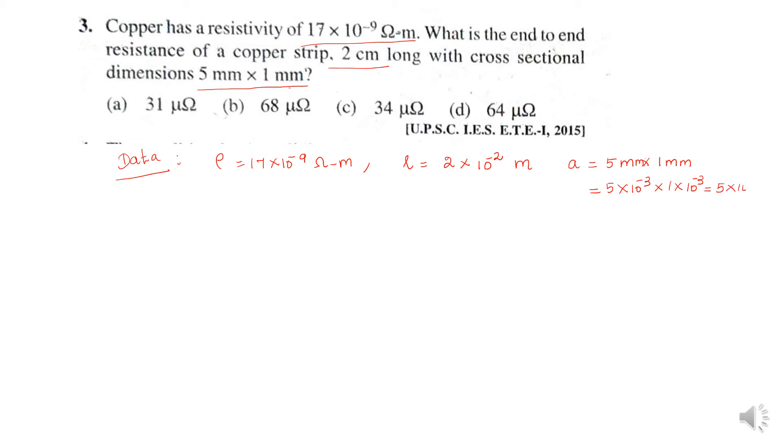So 5 into 10 power minus 3 into 1 into 10 power minus 3, that is equal to 5 into 10 power minus 6. Afterwards find out the value R. R is equal to rho into L by A. So rho value is known: 17 into 10 power minus 9 into L is 2 into 10 power minus 2 meter.